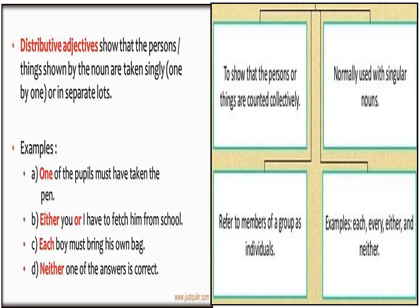Now let's look at what distributive adjectives are. Distributive adjectives show that the persons or things shown by the noun are taken singly, that is one by one or in separate groups. They show that persons or things are counted collectively and are normally used with singular nouns. It also refers to members of a group as individuals. Words like each, every, either, and neither are used.